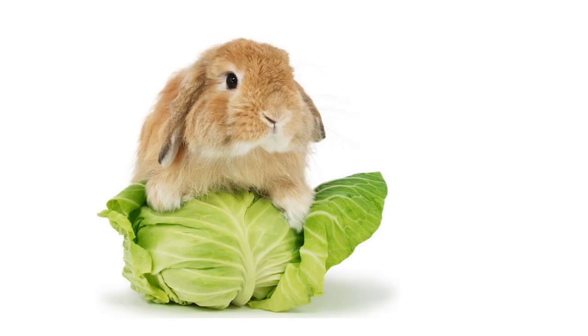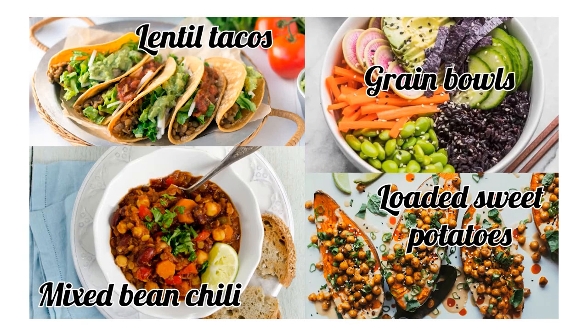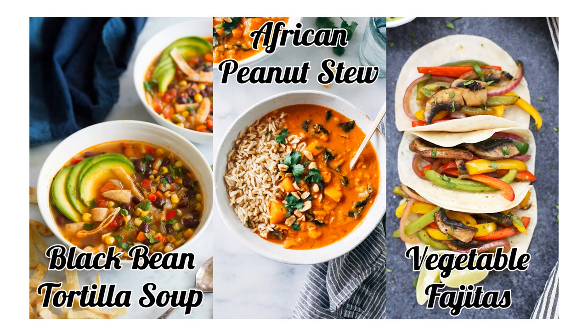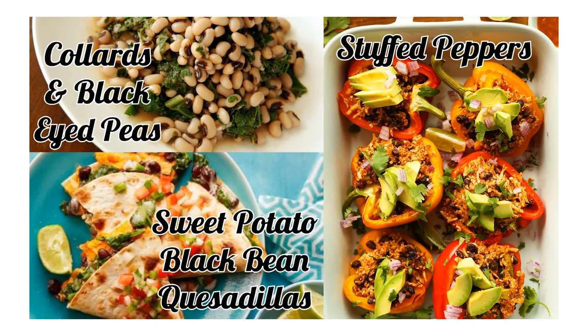So what should I eat? This is not a lettuce and tomato diet — not a rabbit food diet. A lot of people think a plant-based diet means a vegetable-based diet, and then they're set up for failure. You cannot sustain yourself on lettuce, tomatoes, and vegetables alone. This is what it looks like: lentil tacos, mixed bean chili, grain bowls, loaded sweet potatoes, African peanut stew, black bean tortilla soup, vegetable fajitas, spinach and mushroom grits, vegetable tamales, rice and beans, collards, black-eyed peas, sweet potato black bean quesadillas, stuffed peppers.